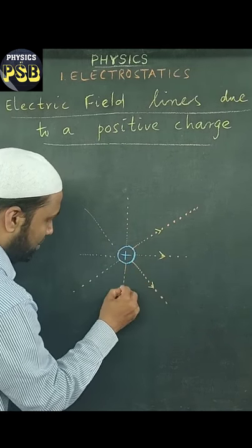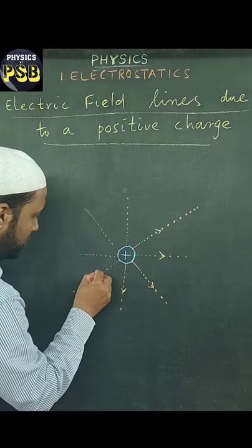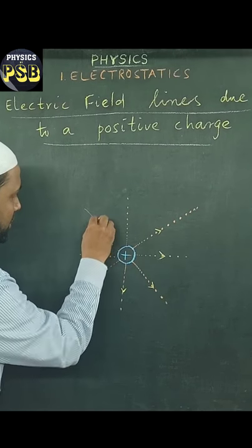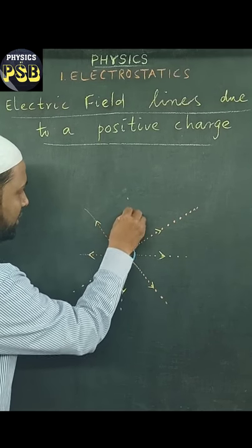This yellow mark represents the direction of the electric field.